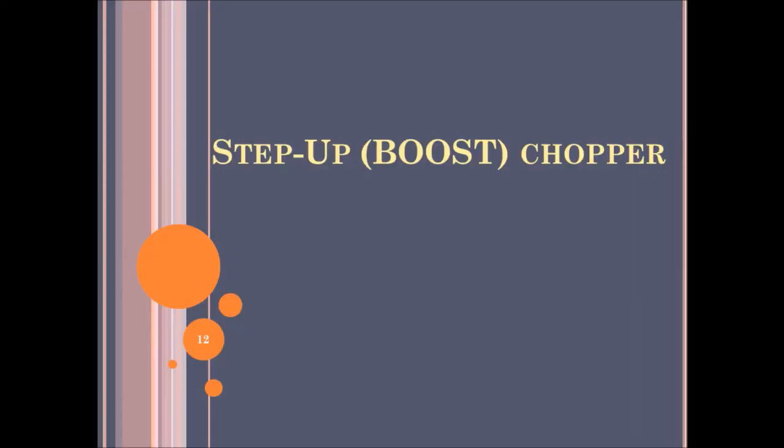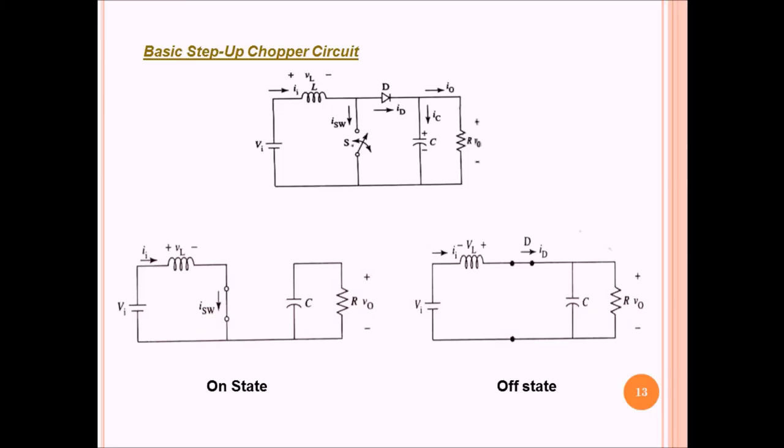Now we are going to discuss the boost converter or boost chopper. In the boost chopper we have the thyristor element here. If we consider the ON state, the power supply current will go from here. It will charge the circuit here and we will get some output over here when the capacitor is charged. If the capacitor is not charged, we will get nothing here. Now in the OFF state, when this switch is off, the voltage will have a single path to go from here. It will charge the capacitor and provide the voltage across the resistor.